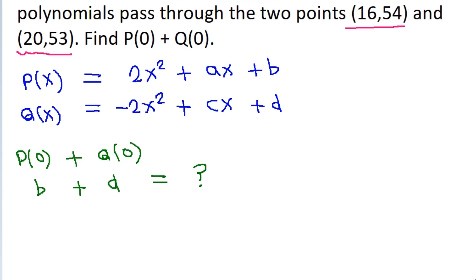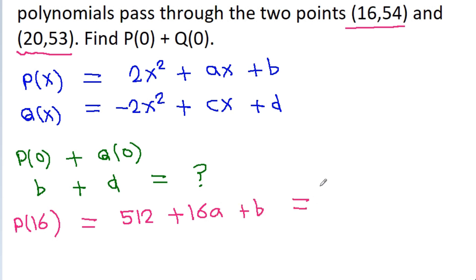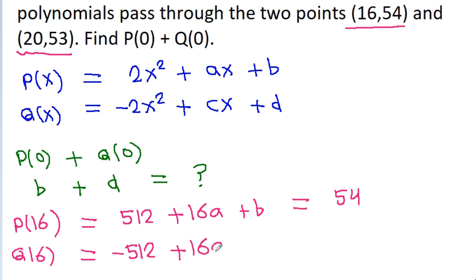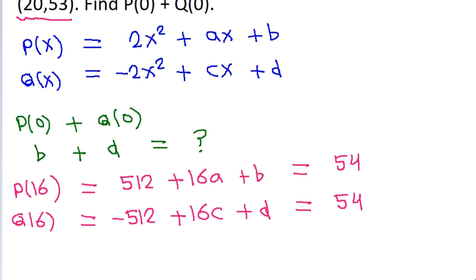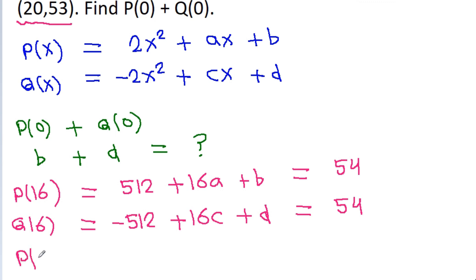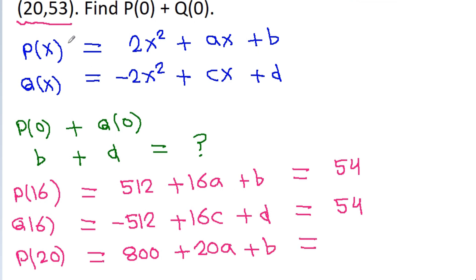That means P(16) equals 2 times 16 squared — that is 512 — plus 16A plus B, which equals 54. And Q(16) equals minus 2 times 16 squared plus 16C plus D, which equals 54. And P(20) equals 2 times 20 squared — that is 800 — plus 20A plus B, which equals 53.